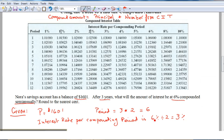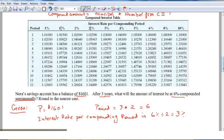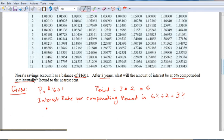Now it says here the compound amount is the principal multiplied by the number from the table. So the compound amount, the maturity value, equals the principal times the number from the table.